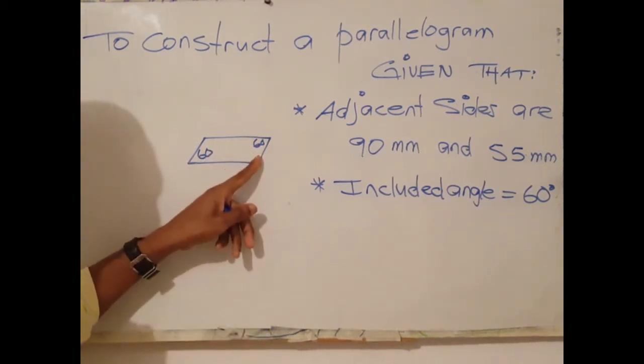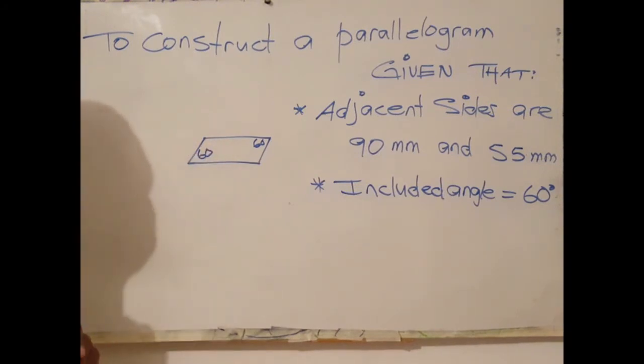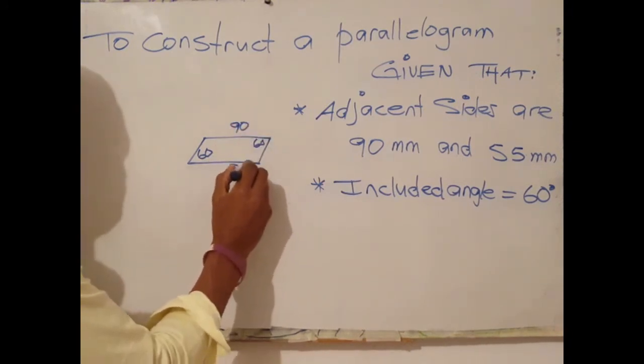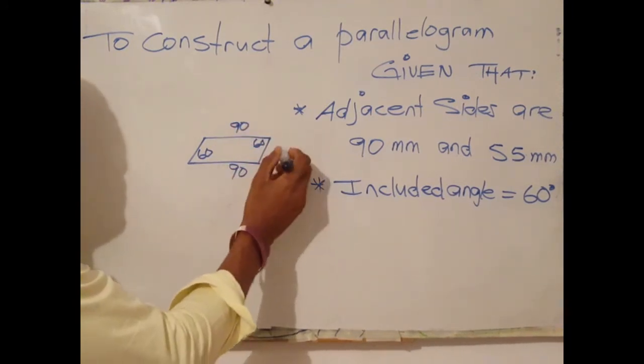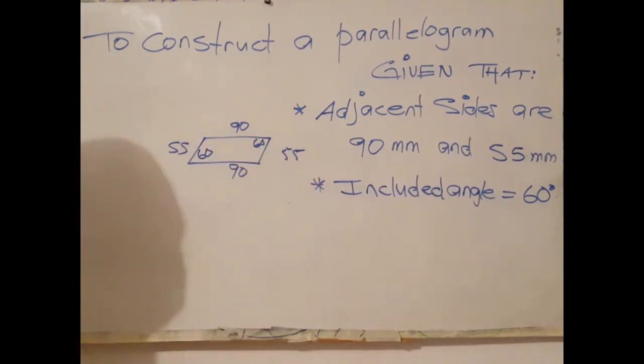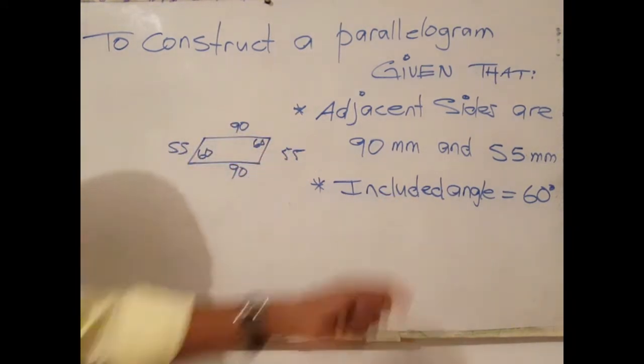So this angle is the same as this angle here. For this particular drawing we have 90 there, 90 here, this side 55, and 55. This is a graphic representation of what we have here.